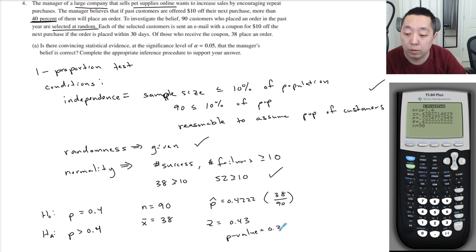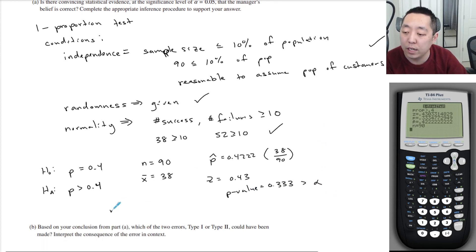And our p value is equal to 0.333. Now this is greater than alpha. So there's not enough evidence, not enough evidence